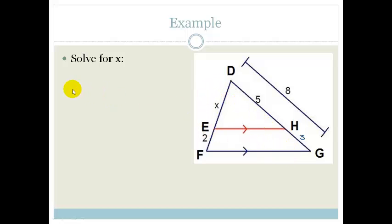We can use our ratio and proportion. We know that DH over HG, because EH is parallel to FG, equals DE which is x over EF which is 5. So we've got 5 over HG which is 3 equals x over 2. We can solve for this by multiplying both sides by 2. So we've got 5 times 2 over 3 equals x. Therefore x is 10 over 3, or 3 and a third. And that's how we use the theorem.